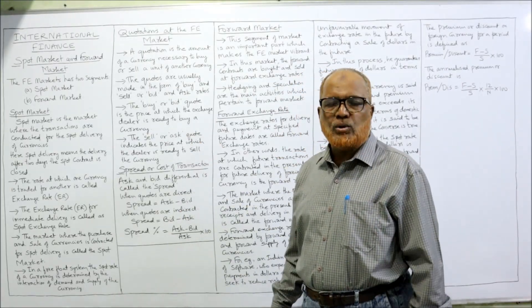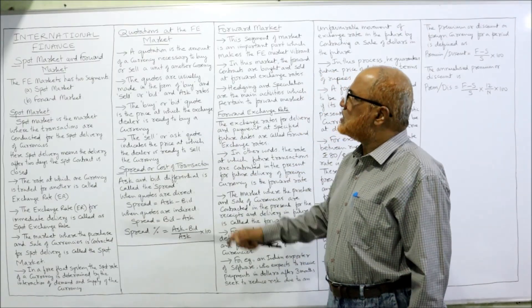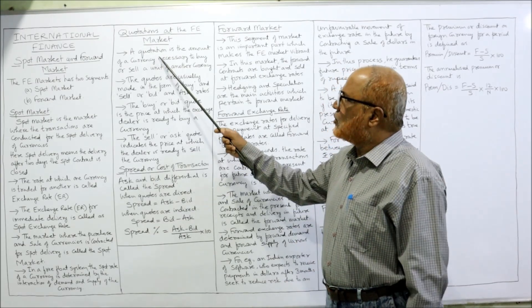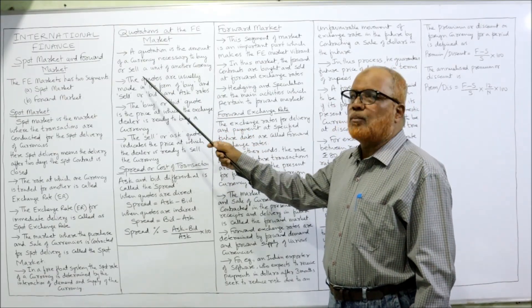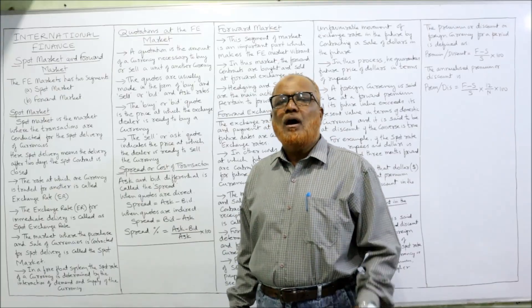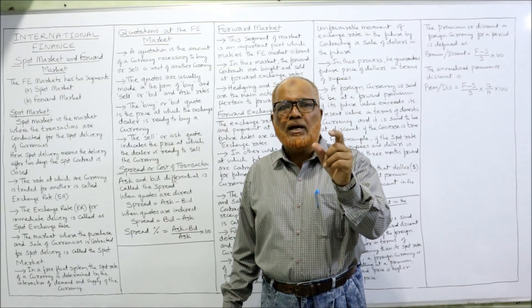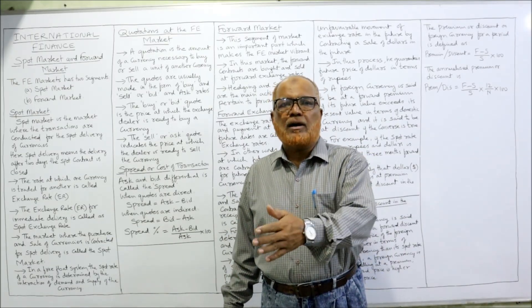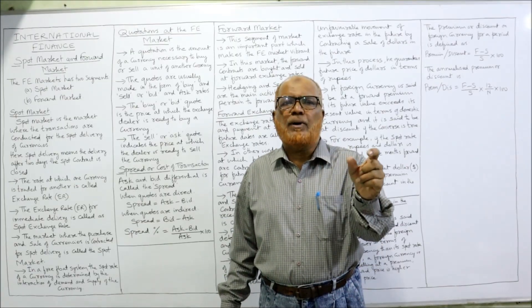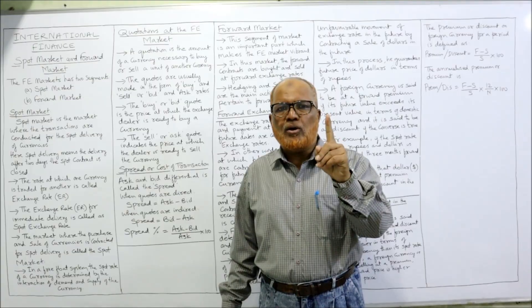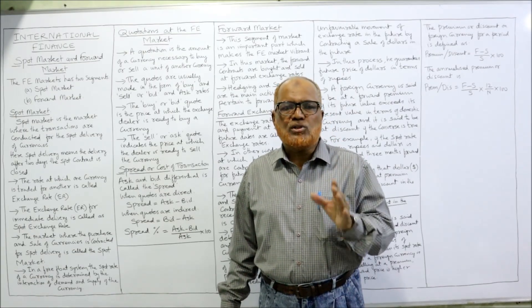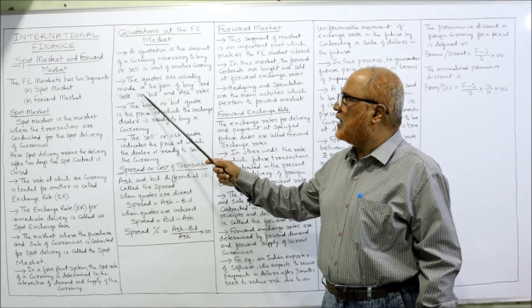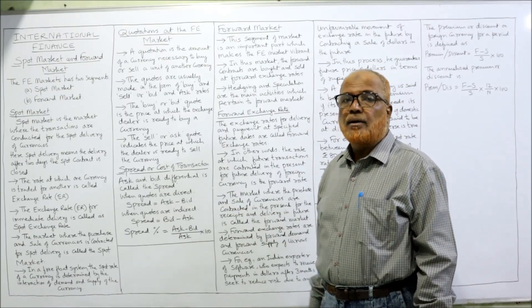Quotations at the spot exchange rate — quotation means the price. The quotation is the amount of currency necessary to buy or sell one unit of another currency. For example, rupees 80 per dollar: to get one dollar we need 80 rupees, so 80 rupees equals one dollar — that is the quotation.